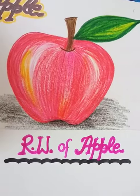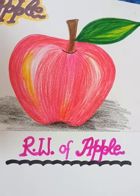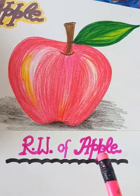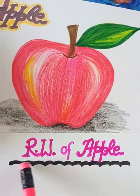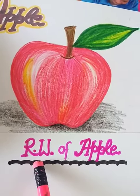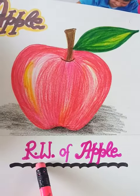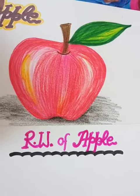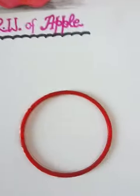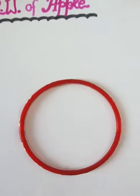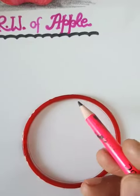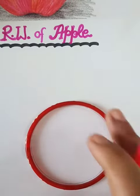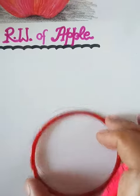Hello my dear students, today we will do RW of apple. RW means revision work. Let us start how to draw. First of all, take a bangle and make a circle.